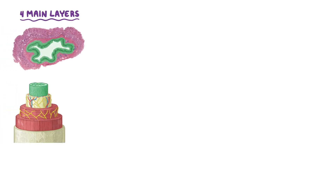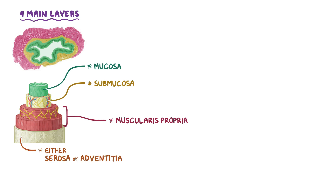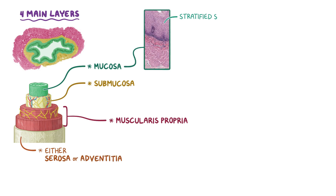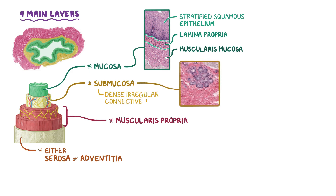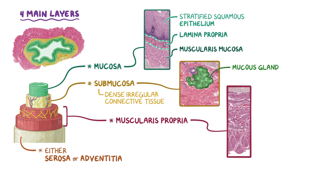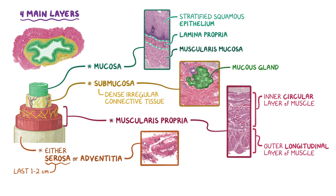As a quick recap: the wall of the esophagus has four main layers — the mucosa, submucosa, muscularis propria, and either the serosa or adventitia. The mucosa consists of three parts: the stratified squamous epithelium, its supporting lamina propria, and a thin layer of smooth muscle called the muscularis mucosa. The submucosa consists mostly of dense irregular connective tissue but also contains unique mucous glands only seen within the submucosa in the esophagus and the duodenum. The muscularis propria is the main layer of both smooth and skeletal muscle, with an inner circular layer and an outer longitudinal layer. The last 1-2 cm of the esophagus have a serosa, but the majority of the esophagus has an outermost layer of connective tissue called the adventitia.